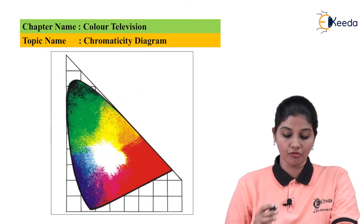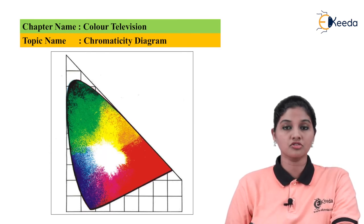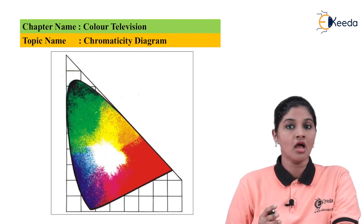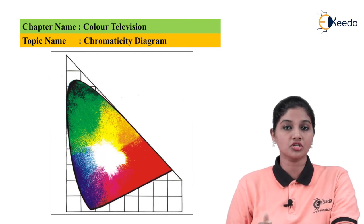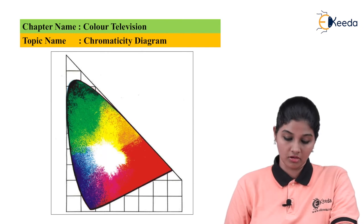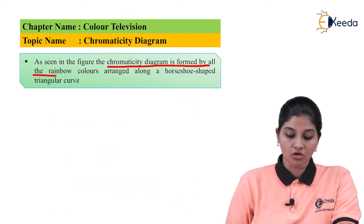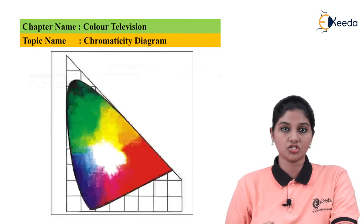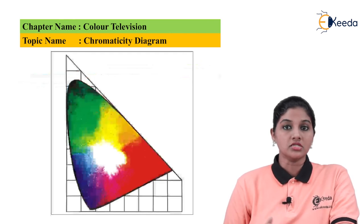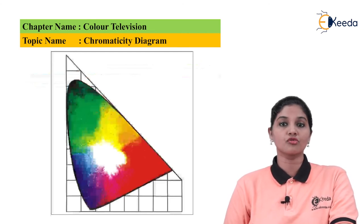The colored two-dimensional chromaticity diagram shows the central part as white, with the remaining area consisting of three primary colors and their mixtures obtained by additive mixing — where colors are added in certain percentages — and subtractive mixing — where primary colors are subtracted from each other. The chromaticity diagram is formed by all the rainbow colors arranged along a horseshoe-shaped triangular curve, with white at the center.